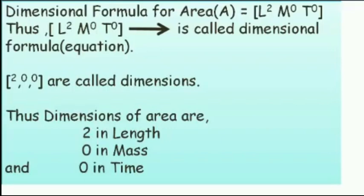M⁰ means mass is zero, time is zero. Thus, [L², M⁰, T⁰] is called the dimensional formula for area. The exponents 2, 0, 0 are called dimensions. Therefore, the dimensions of area are 2 in length, 0 in mass, and 0 in time.